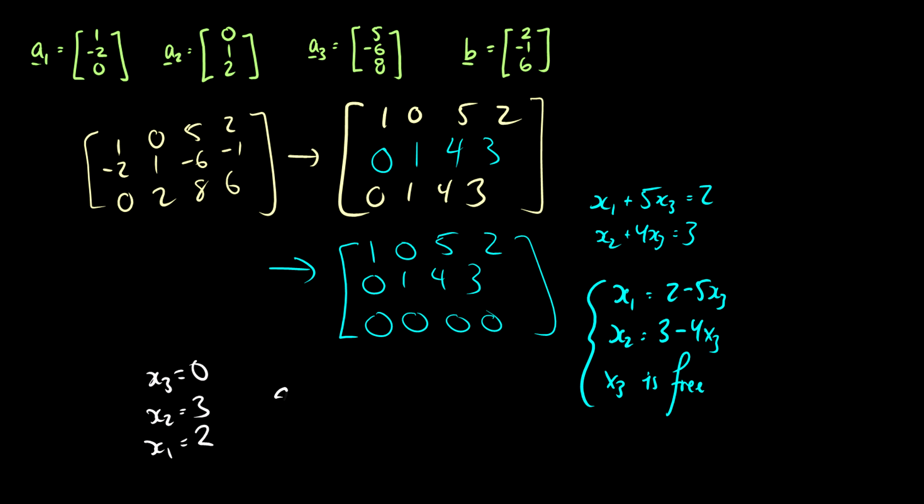We can say, okay, suppose x3 is equal to 0, and that means that x2 is equal to 3 and x1 is equal to 2. So now we can say that yeah, so 2a1 plus 3 of a2 will give you b. So that's one solution. Then we can pick x3 is equal to 1, and we can get a different solution. So there's many different ways we can use x1, x2, and x3, or sorry, we can use a1, a2, and a3 to get the vector b. In fact, in this first, if we pick x3 is equal to 0, we don't even need a3 at all. We can just use a1 and a2.